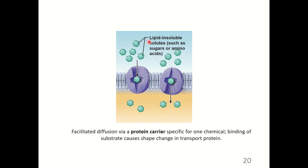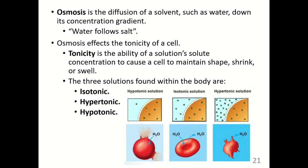Lipid-insoluble solutes such as sugars or amino acids move through protein carriers without using energy, because we're still moving down the concentration gradient. The protein carrier still undergoes a shape change — just like when you swallow liquid or food and your esophagus has to stretch a little bit to let it through. Osmosis is the diffusion of a solvent such as water down its concentration gradient. If you remember that water follows salt, this will help you remember the principle of osmosis.